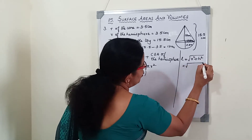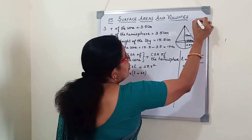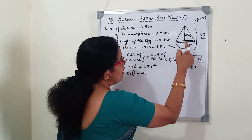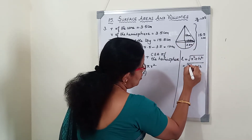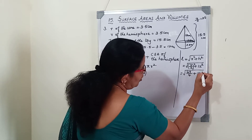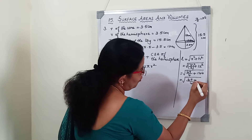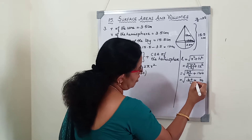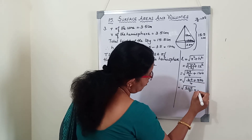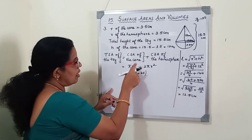We get √(49/4 + 144). Taking LCM of 4: √((49 + 576)/4) = √(625/4) = 25/2 = 12.5 cm. So the slant height is 12.5 cm. Now substituting: (22/7) × (7/2) × (12.5 + 2×(7/2)). Cancelling 7s and 2s, we get 11 × (12.5 + 7) = 11 × 19.5 = 214.5 cm². So the TSA of the toy is 214.5 cm².